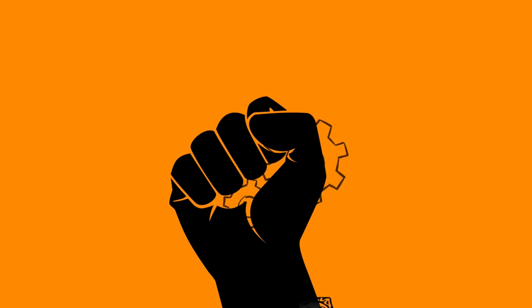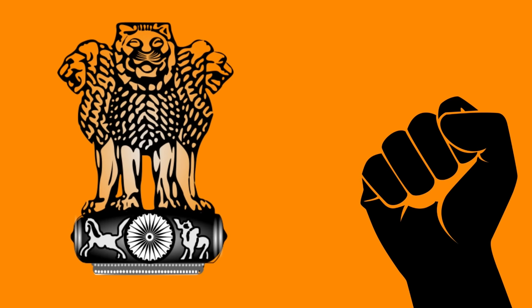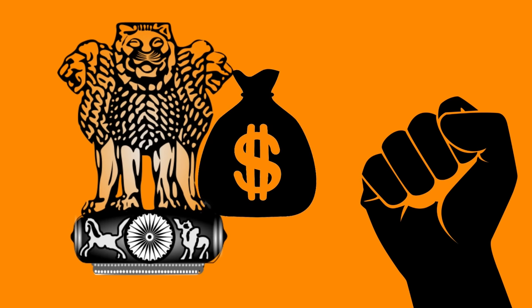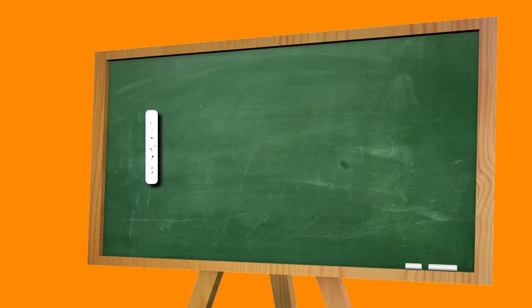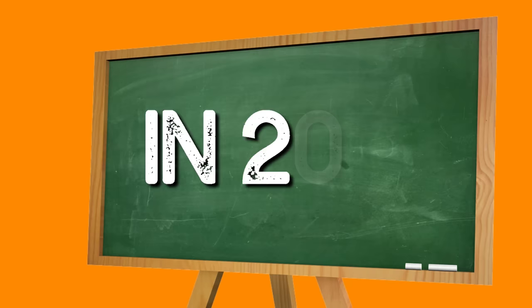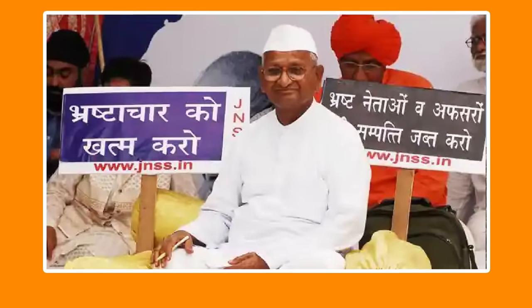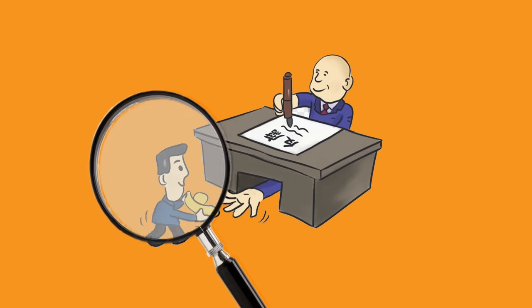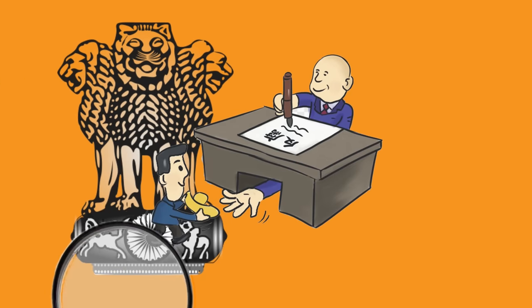According to this Act, we need to properly understand the information we can access. If we rewind to 2011, people came together and pushed for a bill — the Jan Lokpal Bill — to reduce corruption and maintain transparency.